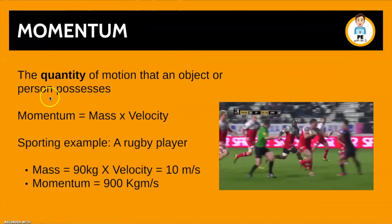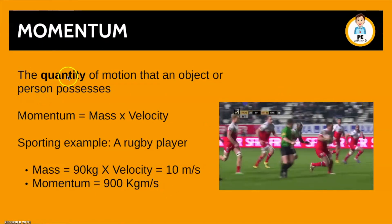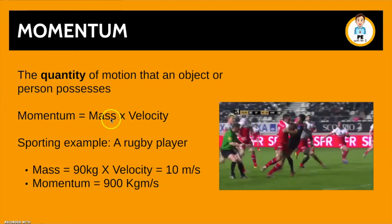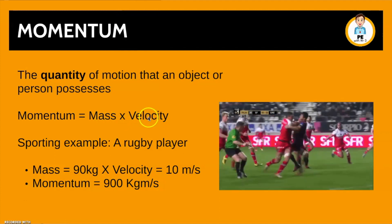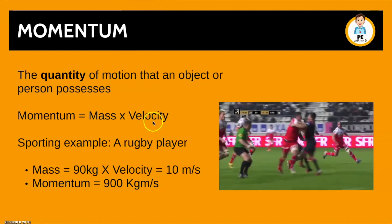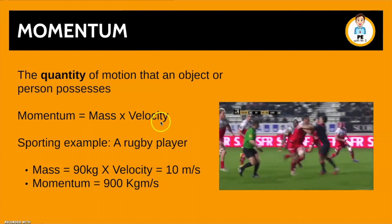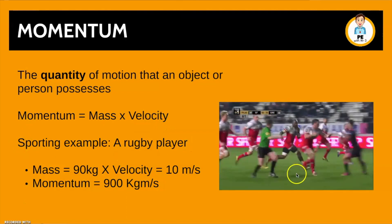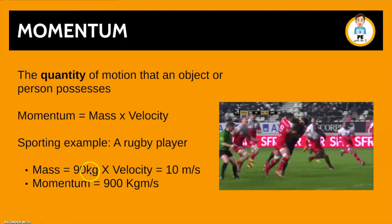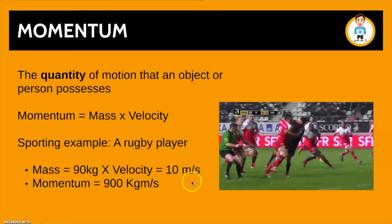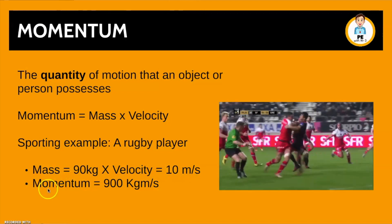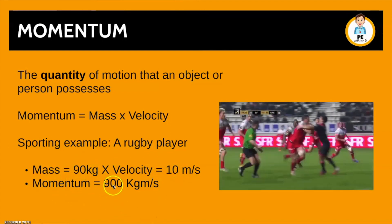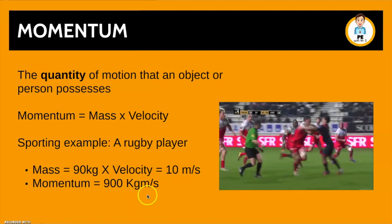Next we're going to look at momentum. This is the quantity of motion that an object or person possesses. The equation is: momentum equals mass times velocity. Velocity is simply speed with a direction. A sporting example is a rugby player — let's say he weighs 90 kilograms and is running at 10 meters per second. To find his momentum, we multiply those together: 90 times 10 equals 900 kilogram meters per second.